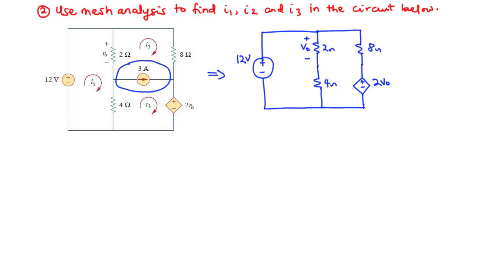We still have the mesh currents I1, I2, and I3. Now we are going to apply KVL to mesh 1 and then to the supermesh. Let's start off with mesh 1.